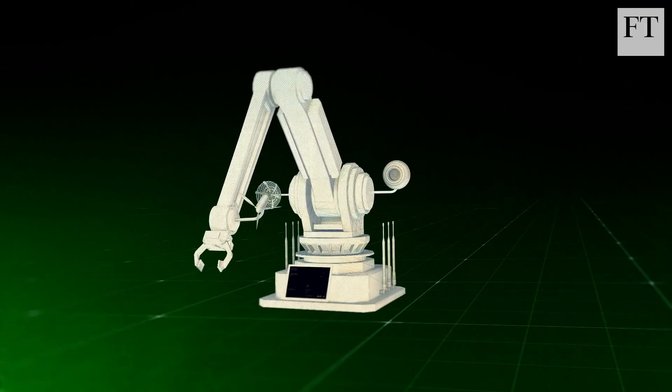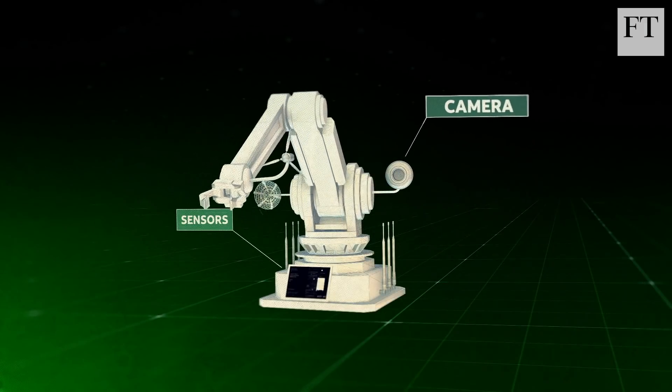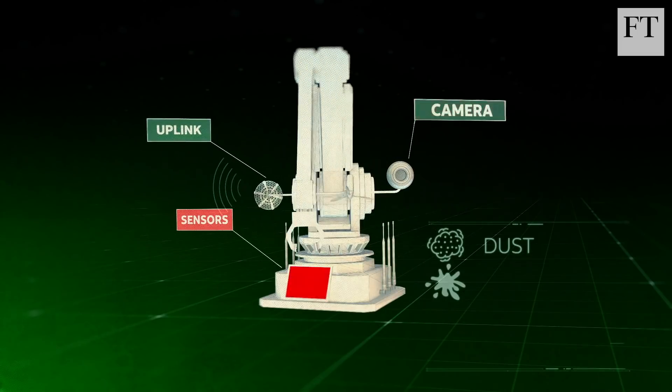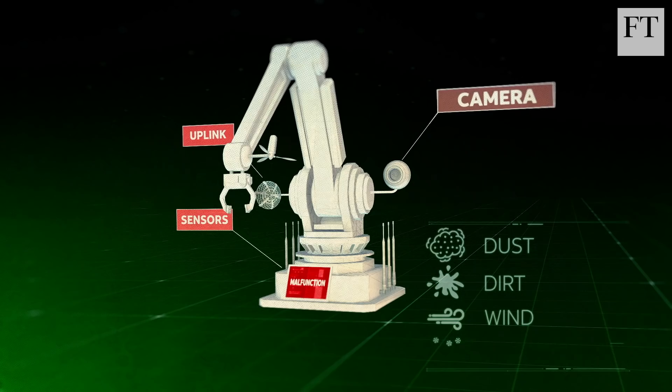Often, the more sensors and cameras stuffed into a robot to improve its performance, the more fragile and unsuited it becomes to operate reliably amid dust, dirt, wind and a variety of temperatures.